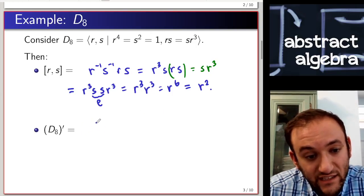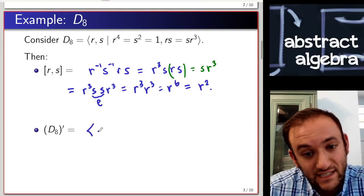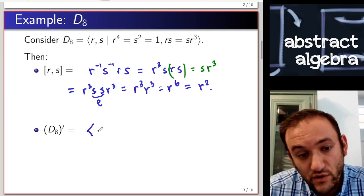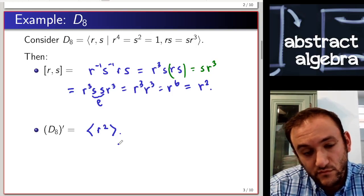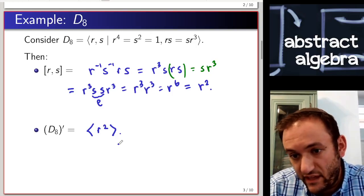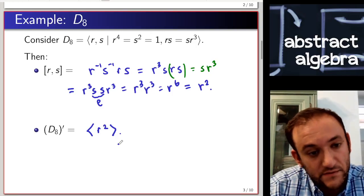So we learn that r squared is a commutator in the group D8. And in fact, the identity and r squared are the only commutators, which you can check by going through pairs of elements.